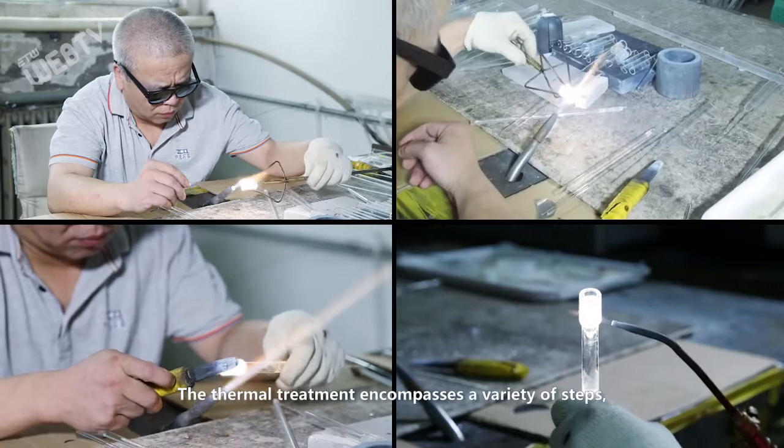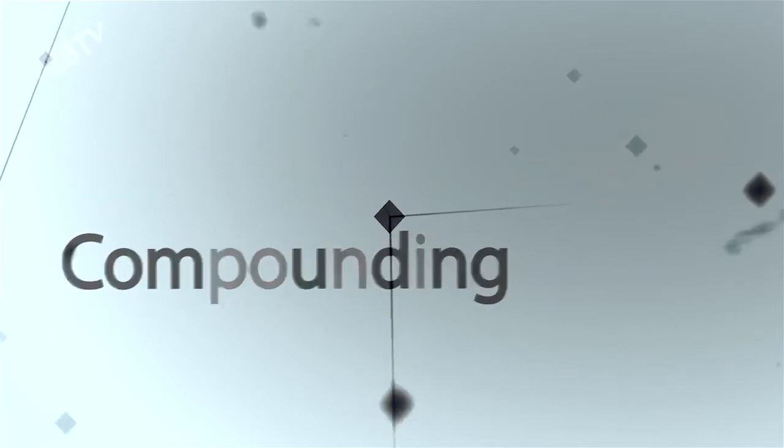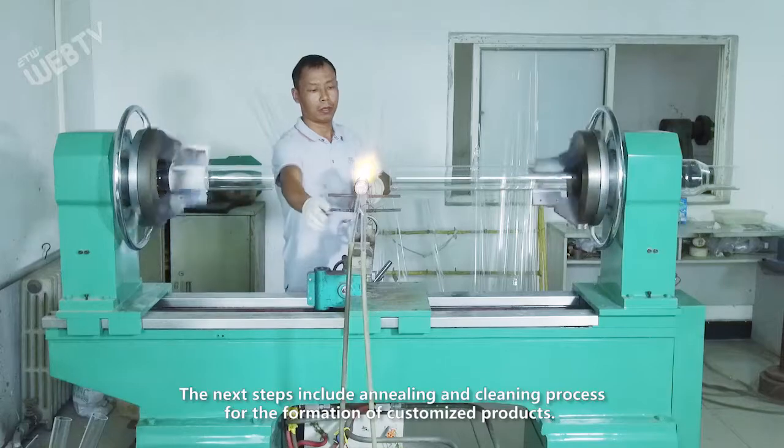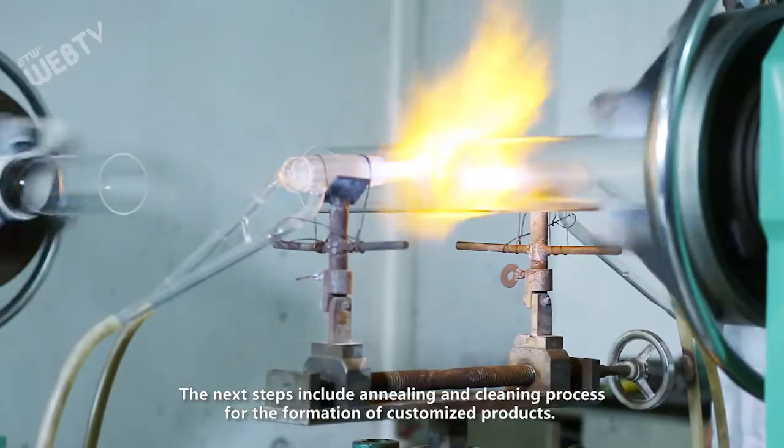The thermal treatment encompasses a variety of steps including forming, bending, compounding, bonding, and curving. The next steps include an annealing and cleaning process for the formation of customized products.